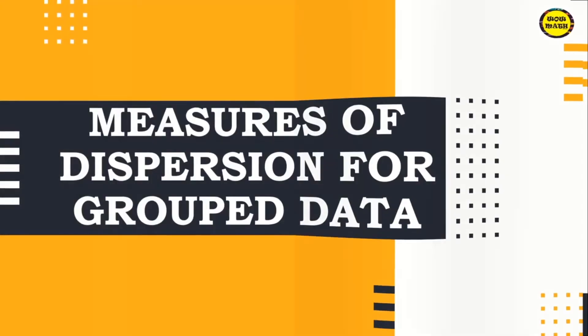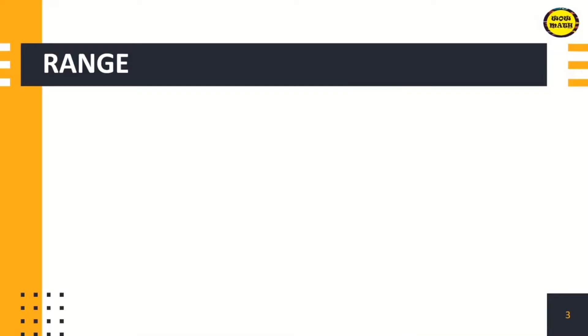Let us start with the range. Now, unlike in the ungrouped data, all we need to do is just subtract the highest value minus the lowest value, and then we were able to identify the range.